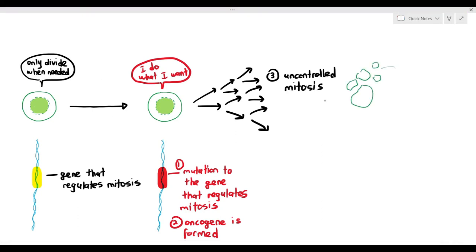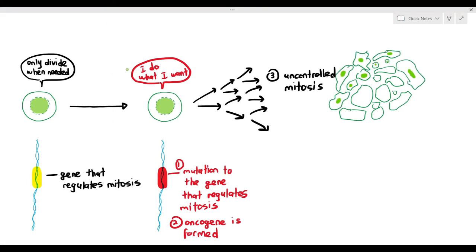Looking at the tumor, you'll notice that the cancer cells are all different sizes — they have irregular sizes, and the size of their nuclei is quite different too. This is a defining feature of most cancer cells: because they are dividing so quickly, they don't have time to grow and mature. So some cells will be very small, some very large, and even their shapes will be quite irregular.